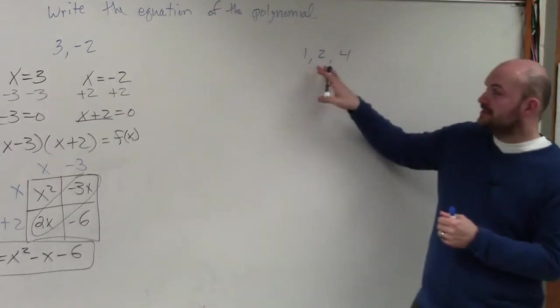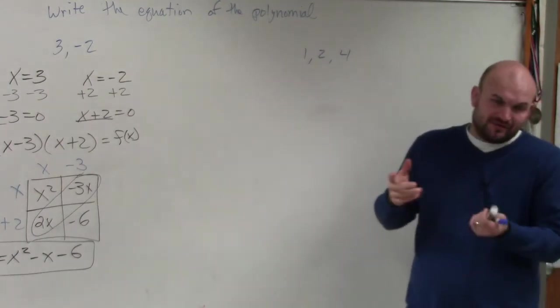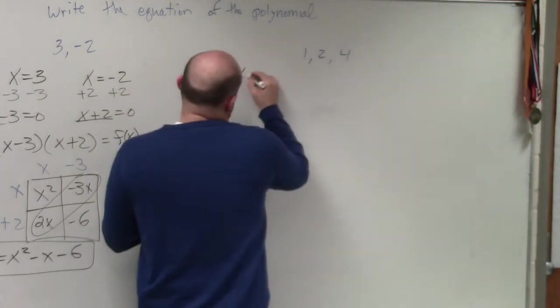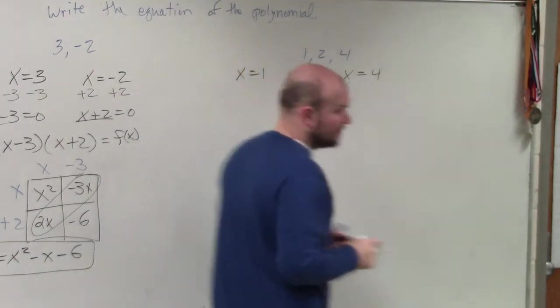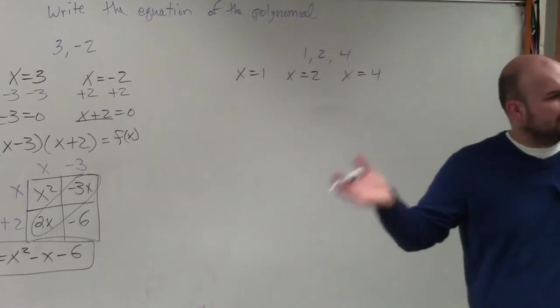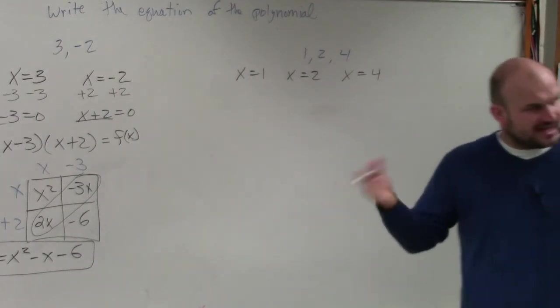So let's just take, well, first of all, we're going to, I'm going to write everything equal to x. So I'm going to say x equals 1, x equals 2, and x equals 4. Right? That's your first step. It's very easy. You just take whatever you have and just set it equal to x.